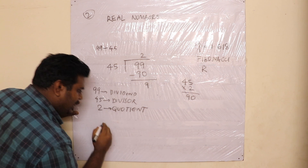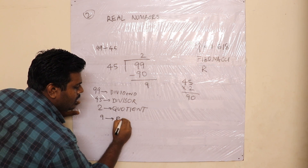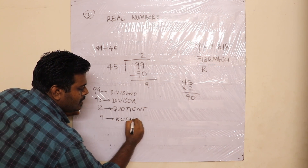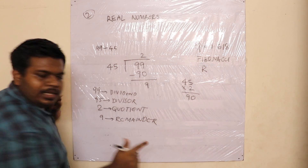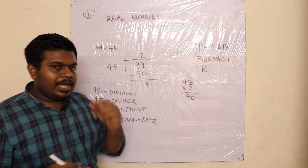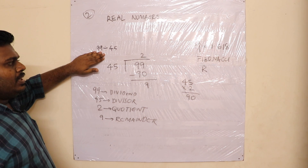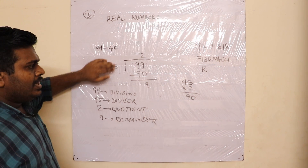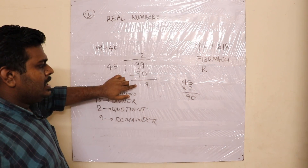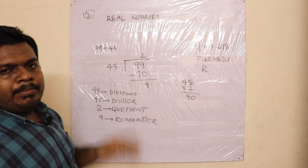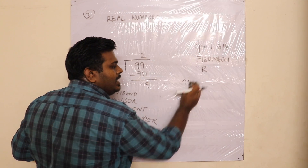The quotient is 2. Subtract 90 from 99. The remainder is 9. So: 99 is the dividend, 45 is the divisor, 2 is the quotient, and 9 is the remainder.